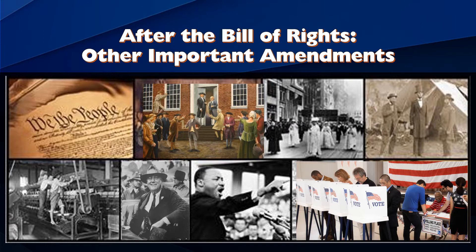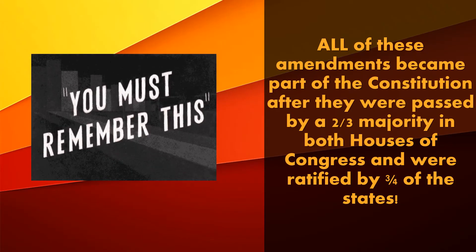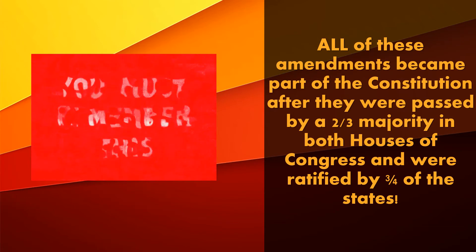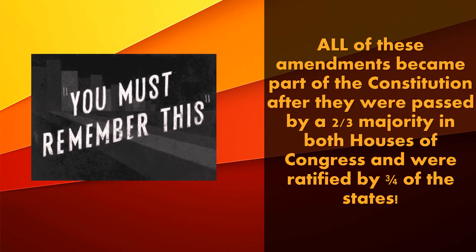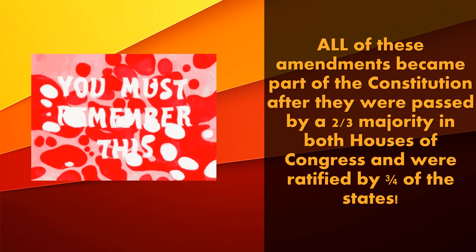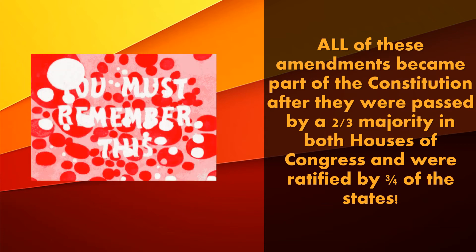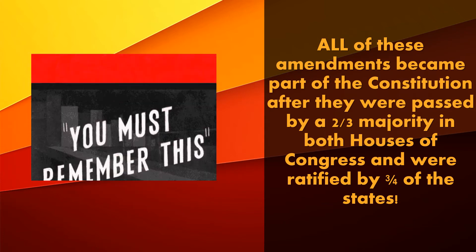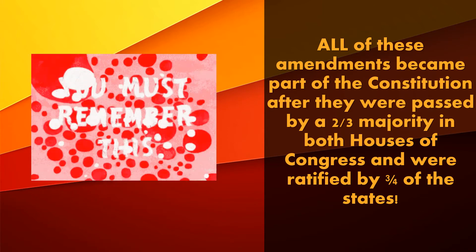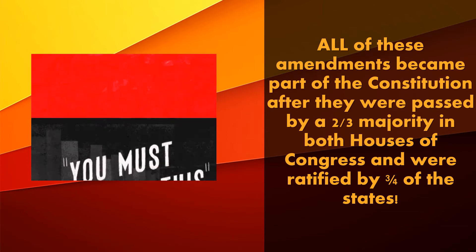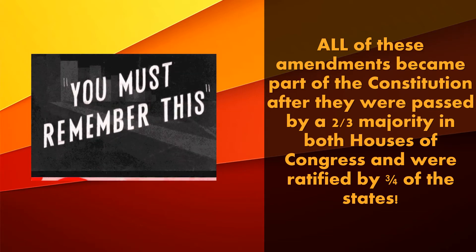The first ten amendments were all passed at the same time, back in 1790-91. All the others were passed over the 200-plus years since then. To pass an amendment to the constitution is not easy — it's supposed to be difficult. A two-thirds majority of the House and the Senate have to say yes, and then three-fourths of the states also have to ratify it. So it's a big deal.